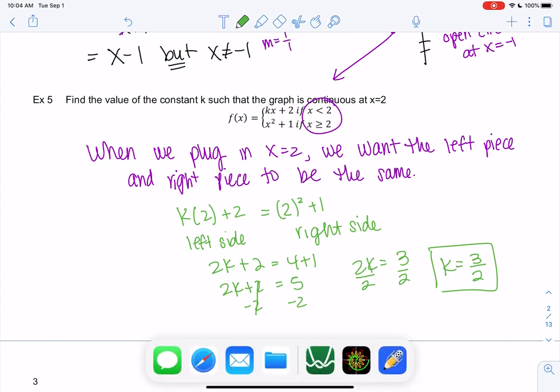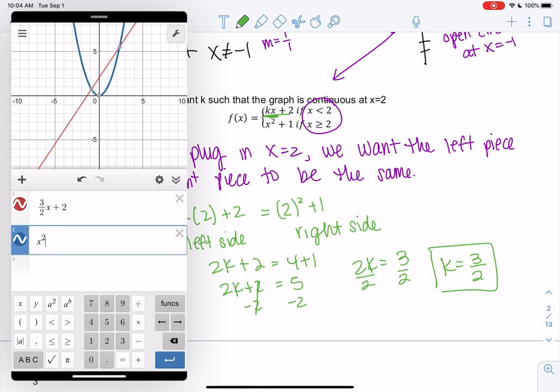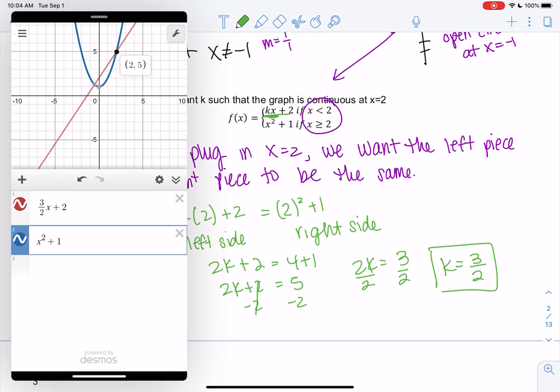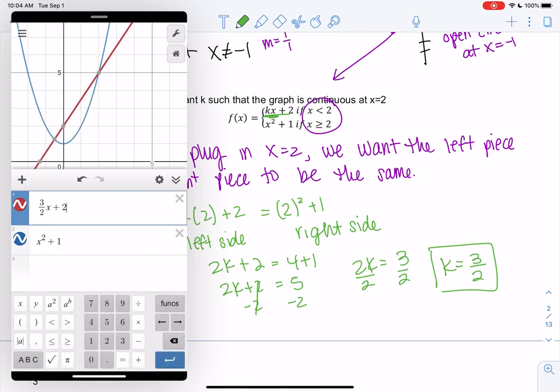Let's actually check our work with Desmos. So let's see, 3 halves x because k is 3 halves, plus 2. It's going to draw the whole line, that's okay. And then x squared plus 1. Let's see, it's at 2. Do they meet at the same spot? Yeah. So that means when we do the pieces, I don't know if you can do pieces on this version.